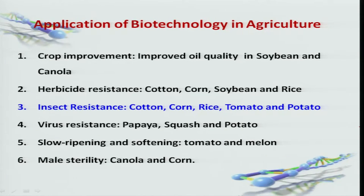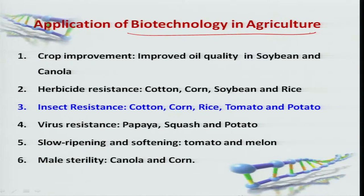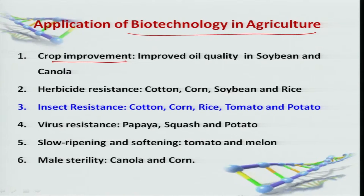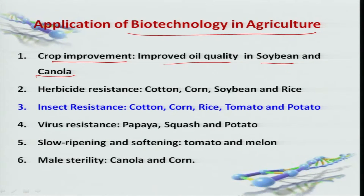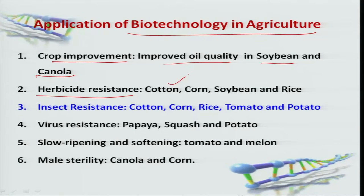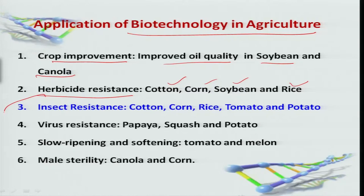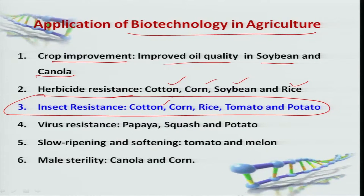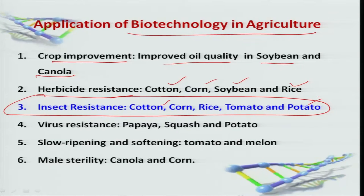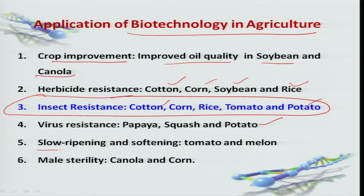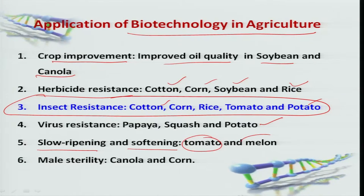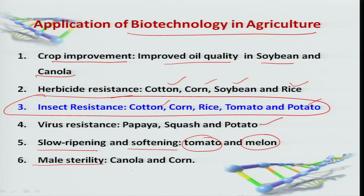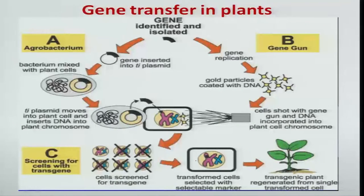The applications of biotechnology in agriculture go beyond pest management. In crop improvement, for example, improving oil quality in soybean and canola has been achieved. Herbicide-resistant varieties have been developed in cotton, corn, soybean, and rice. Biotechnology has also been employed in managing various pests in cotton, corn, rice, tomato, and potato, as well as developing virus resistance. Slow ripening and softening have been achieved in tomato and melon, and male sterility has been achieved in canola and corn through breeding programs.